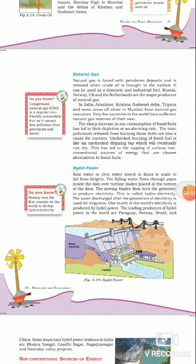Natural gas is found with petroleum deposits and it's released when crude oil is brought to the surface. It is found under the surface of the earth where petroleum is available, and above that level natural gas is available.